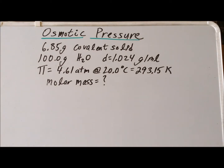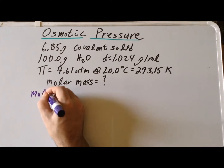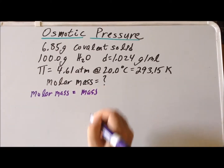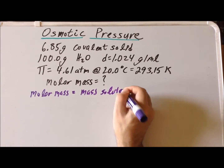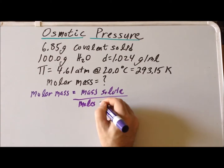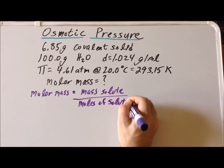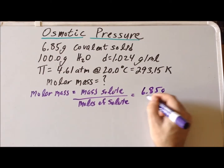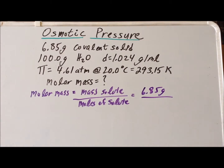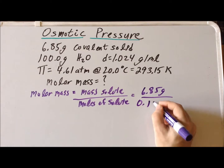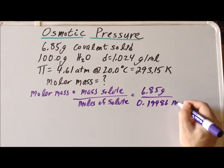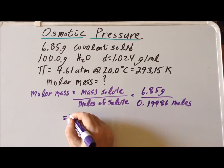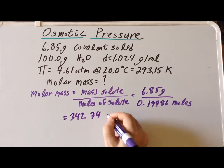We are now able to solve for the molar mass, which is the mass of our solute divided by the number of moles of our solute. The mass is 6.85 grams, and we determined that we have 0.019986 moles. This gives us an answer in grams per mole, which turns out to be 342.74 grams per mole.